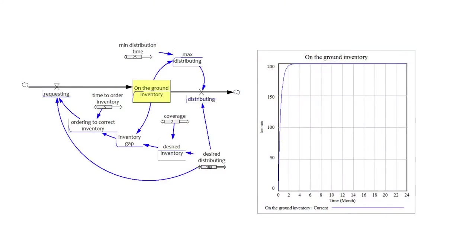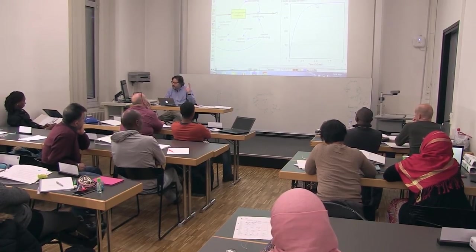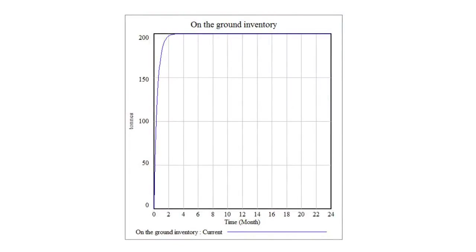And so inventory starts rising quickly when the gap is larger. As the gap closes, we gradually order less and less. And so we get that kind of pattern. And with that kind of pattern, what kind of a loop should this be?